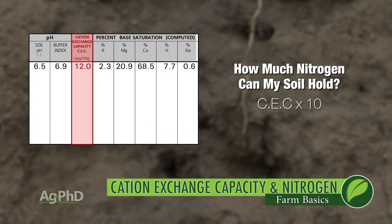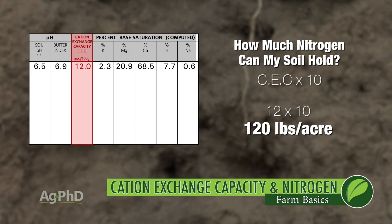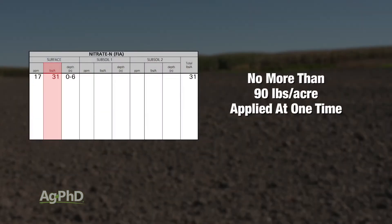The number we'll use is 10 times the cation exchange capacity. So let's say, for example, your CEC was 12. 12 times 10 is 120 — we would tell you that at any point, your soil can hold about 120 pounds of nitrogen. So if you run a soil test and find it already has 30 pounds sitting there, we would tell you the most you should apply in one application is 90 pounds.